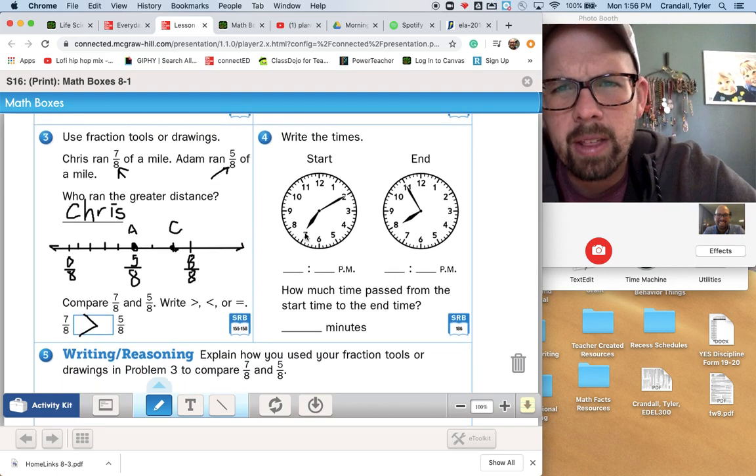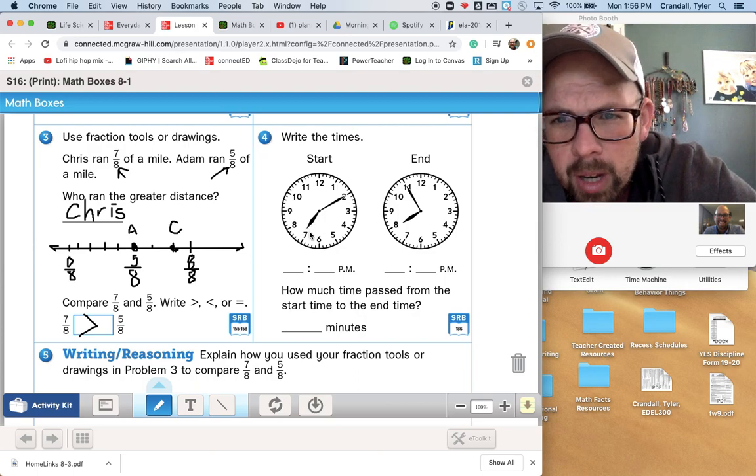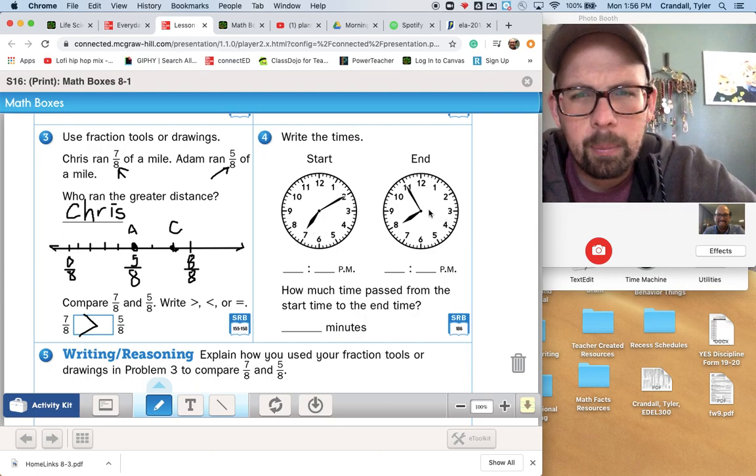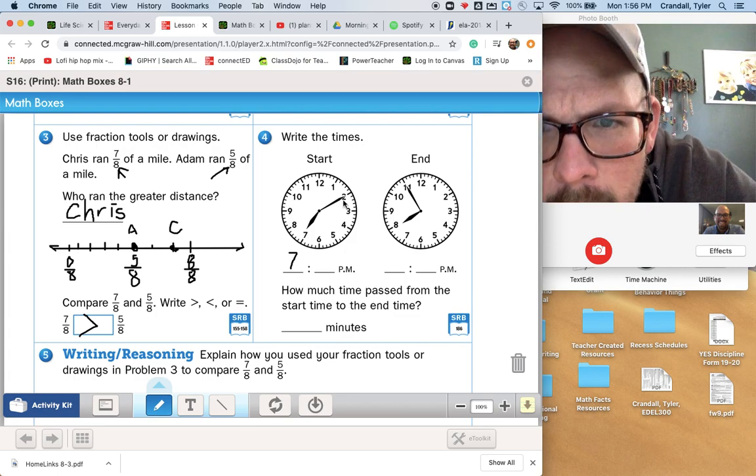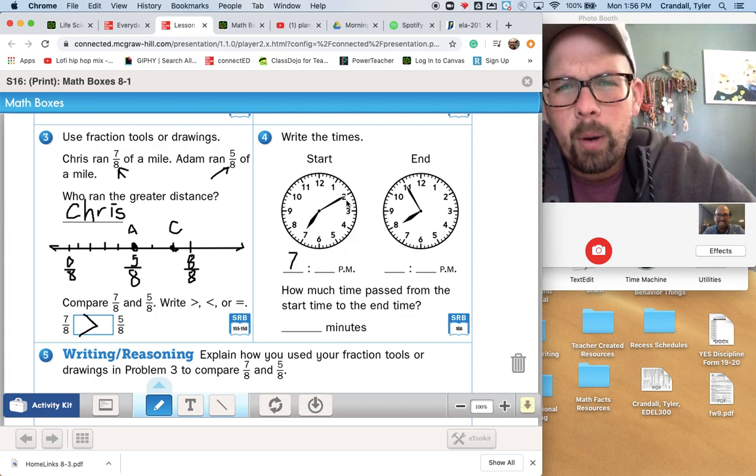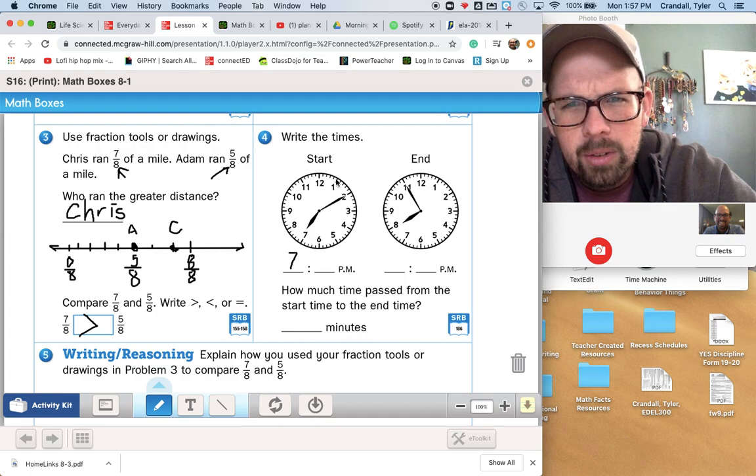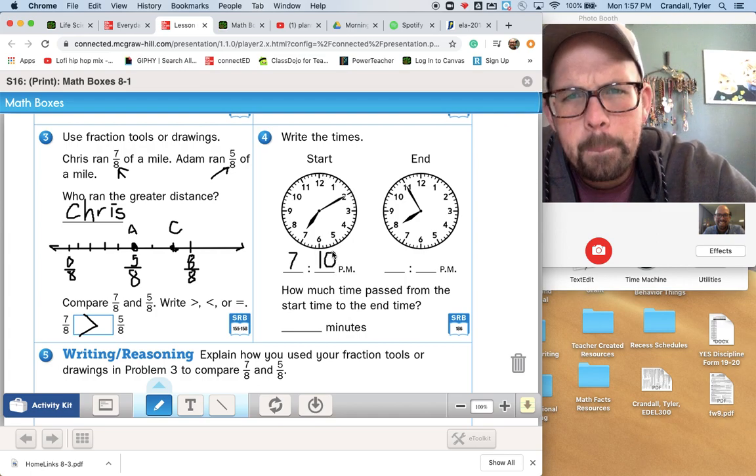Number four says, write the times. Starting time. So with a clock, I'm looking at the hands. The hour hand is here between 7 and 8. So it's 7 something p.m. And the minute hand is pointing at, extreme close up, it's pointing at the 2, and we count those by 5 minutes, so 5, 10. So 7:10 p.m.